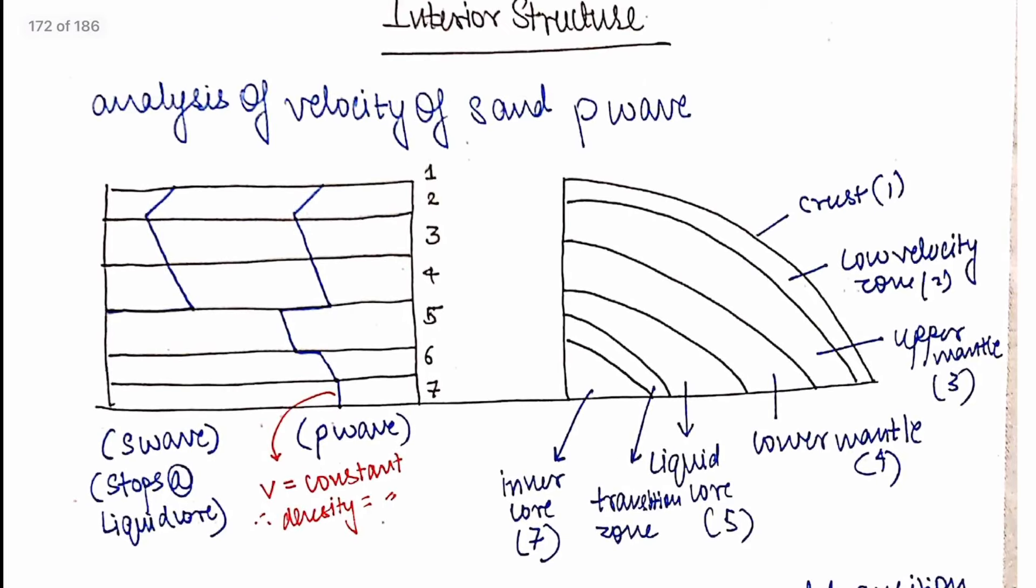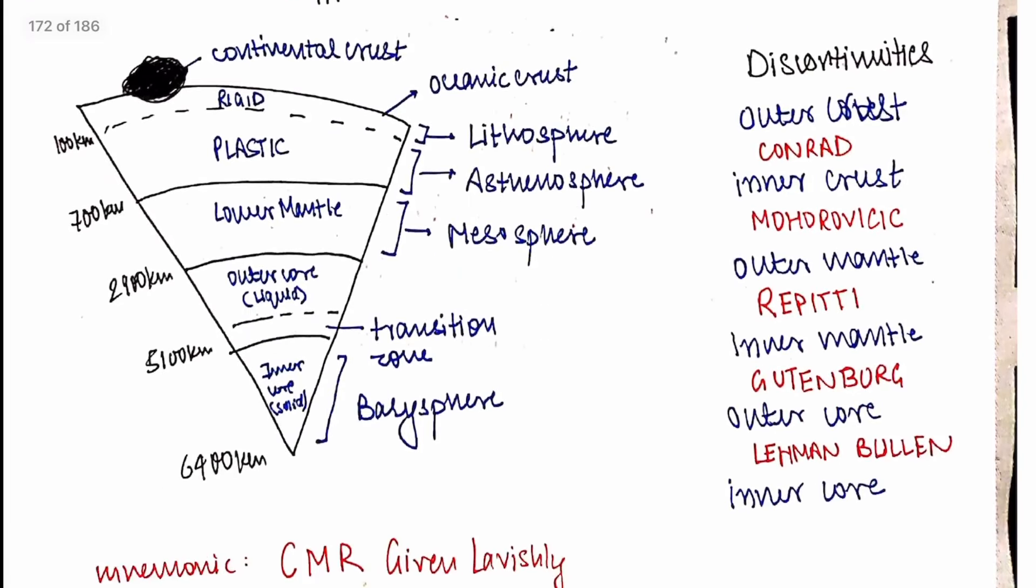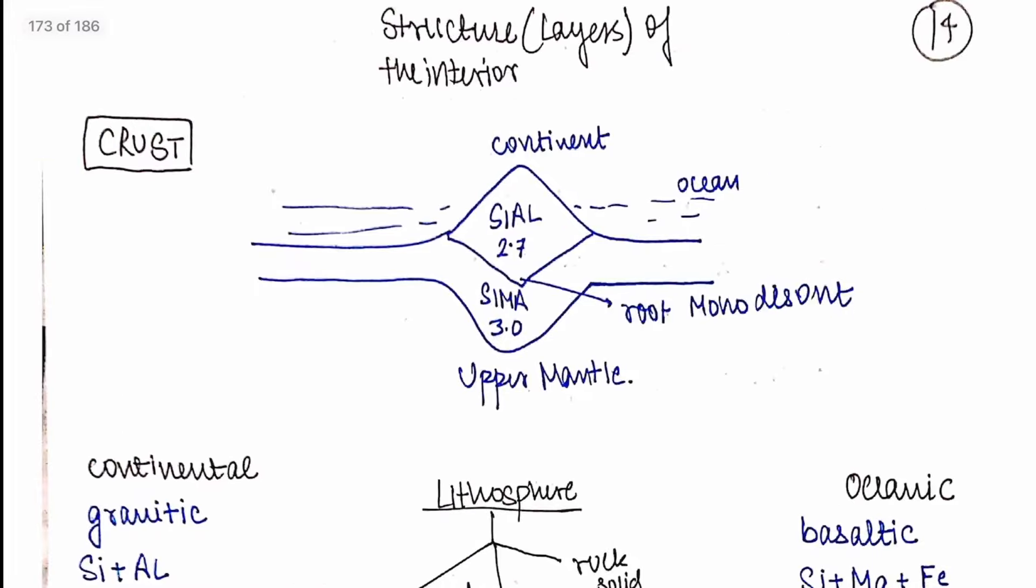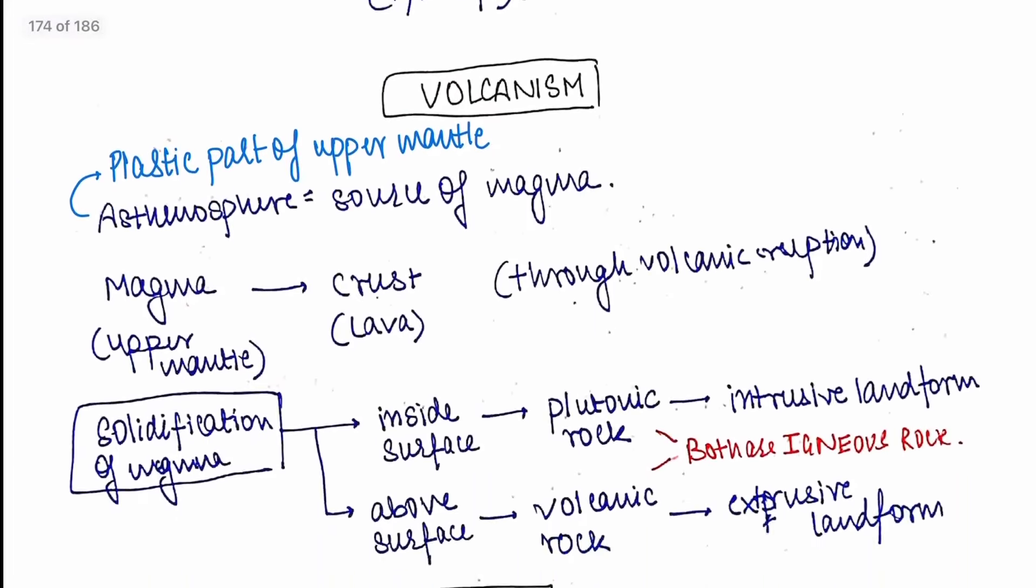Then interior structure. This is something that's given in GC-Liong very well. S and P waves analysis, then these discontinuities. These are not mentioned in NCRT. So this you have to do from YouTube. You search interior structure of the earth on YouTube and you will see these discontinuities - Conrad, Mohorovicic etc. So there's a small mnemonic also. Things like this. And this is a diagram directly from GC-Liong. So make diagrams in your notes. Since there are two sources you won't be able to revise from one source at the end.